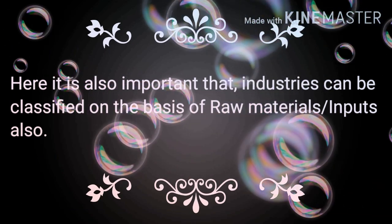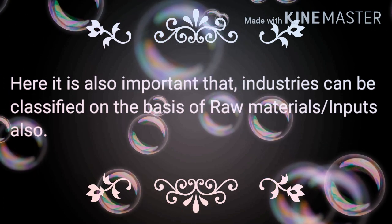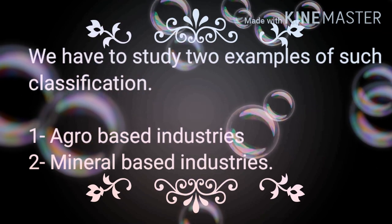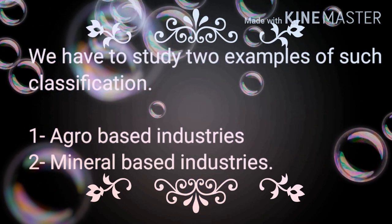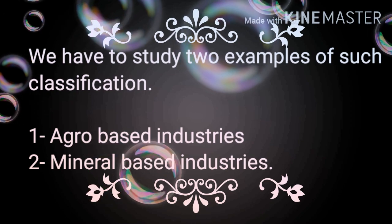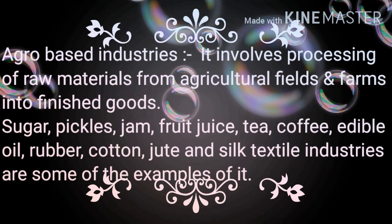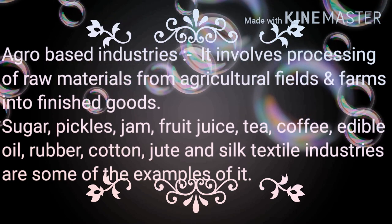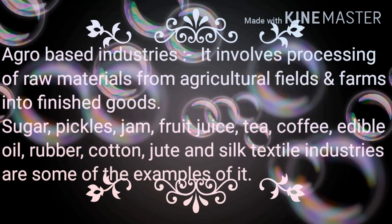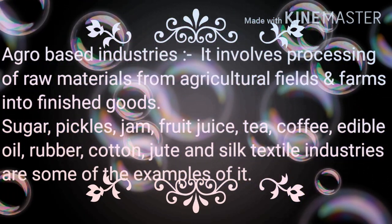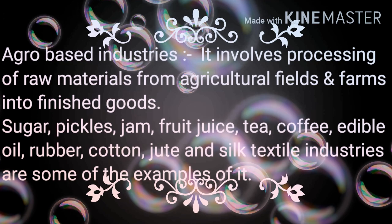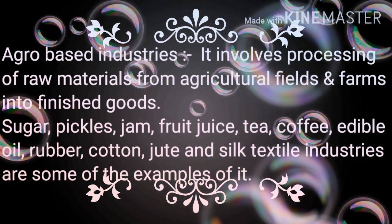Industries can also be classified on the basis of raw materials or inputs. We will study two examples: agro-based industries and mineral-based industries. Agro-based industries involve processing of raw materials from agricultural fields and farms into finished goods — sugar, pickles, jam, fruit juice, tea, coffee, edible oil, rubber, cotton, jute, and silk textile industries are some examples.